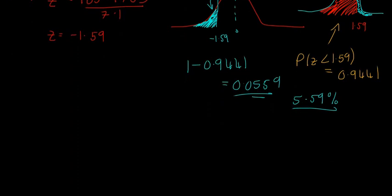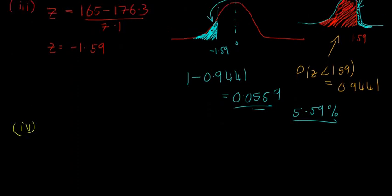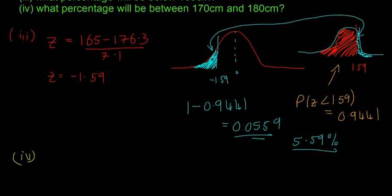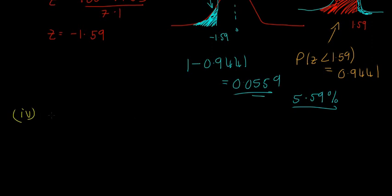So now we'll try part four. So part four is how many are between 170 and 180 cm. So this one's a little bit trickier, but again, the first thing we're going to do is get the Z-scores for each. So z = (170 - 176.3) / 7.1, and then for 180 as well, z = (180 - 176.3) / 7.1.